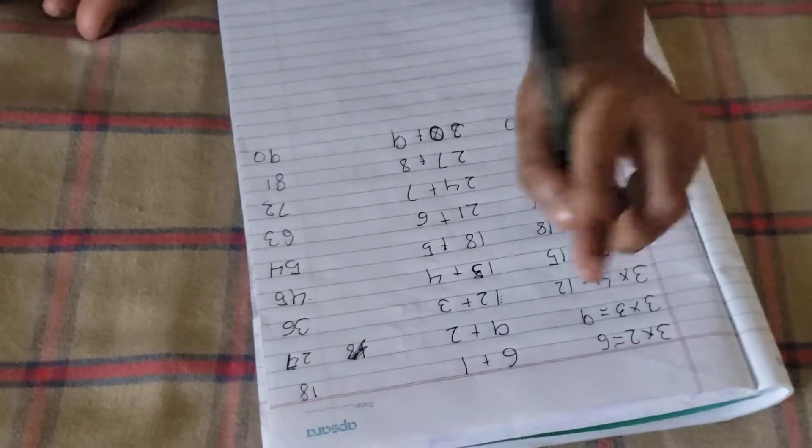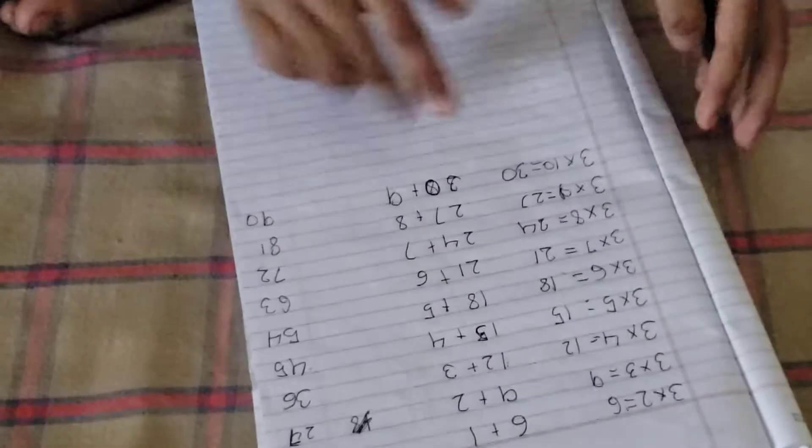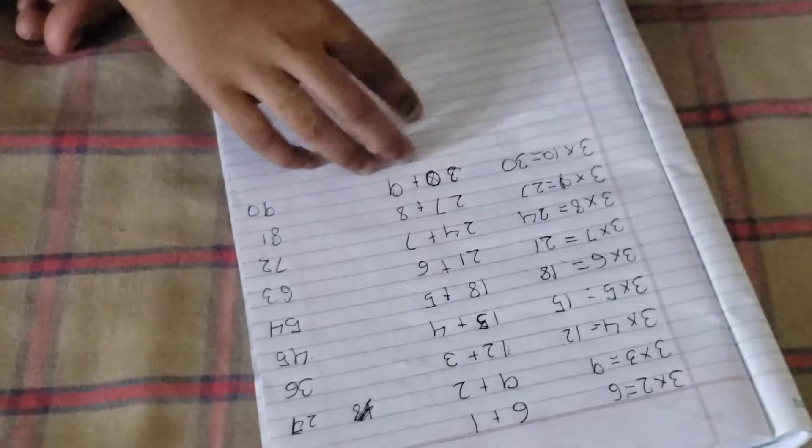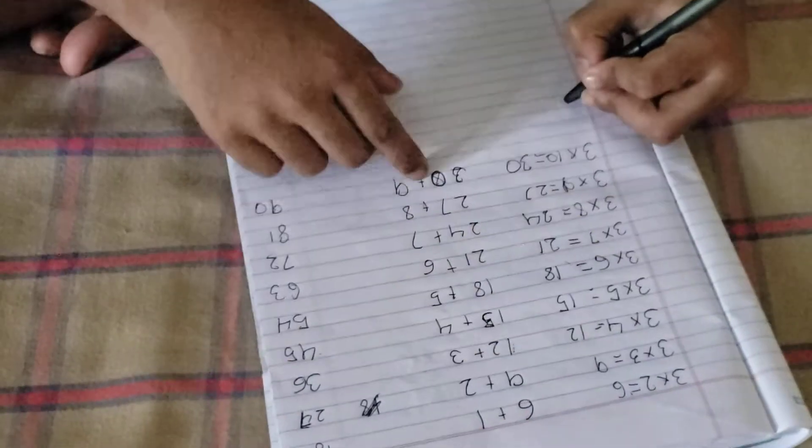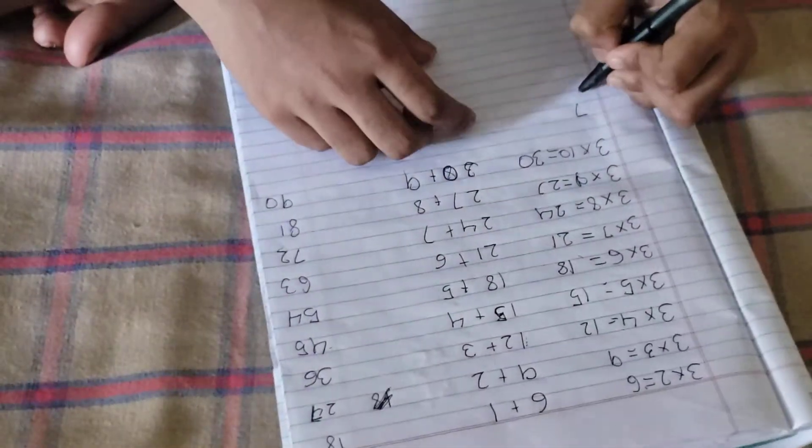So actually, we're writing it. Just calculate it. I'll write it in this paper. So 6 plus 1 is 7. 9 plus 2 is 11.